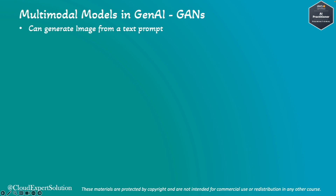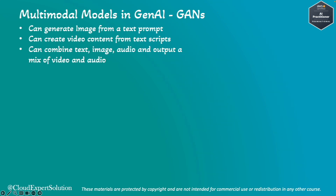Some examples could be generating realistic images from a text prompt, or creating video content from a text script. It can combine text, image, and audio to generate output as video and audio. For instance, you can feed a text file, a static image, and audio of a person and request to generate a deepfake video for that person.